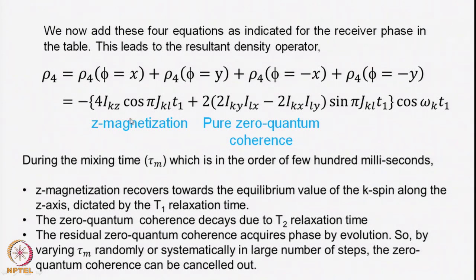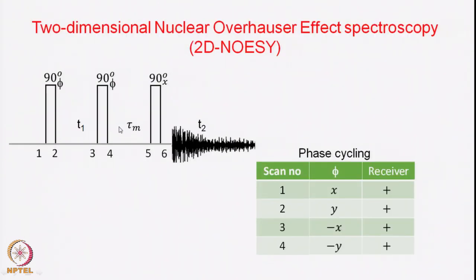Neither the Z-magnetization nor the zero quantum coherence is directly observable. Another 90-degree pulse is required to convert them into observable magnetization. That pulse is present in the NOESY pulse sequence. Before that final pulse, there is a period called τm, which is the mixing time. Looking at the density operator at this point, we found only Z-magnetization and zero quantum coherence after the phase cycling.